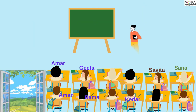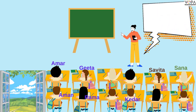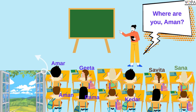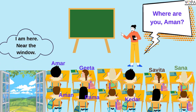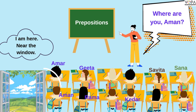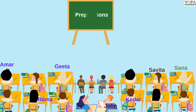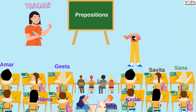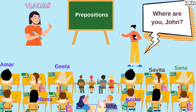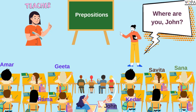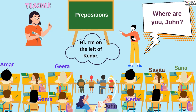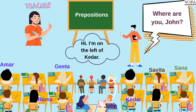Now I am going to ask Amar. Where are you, Aman? Aman says: I am here, near the window. Great. Now I am going to ask John. Where are you, John? John answered: I am on the left of Kedar.